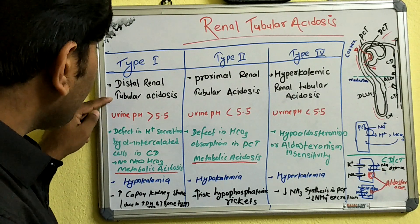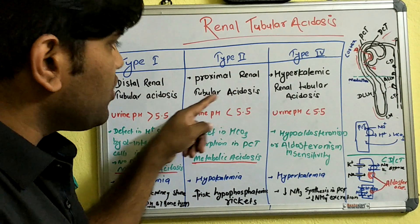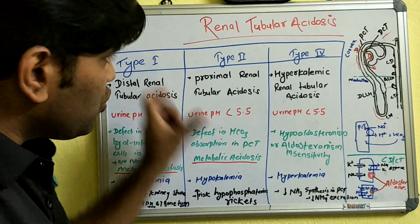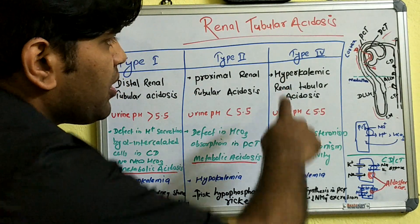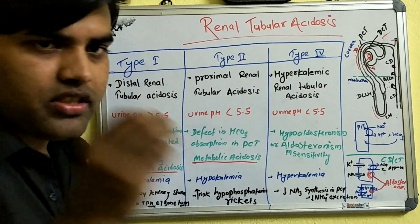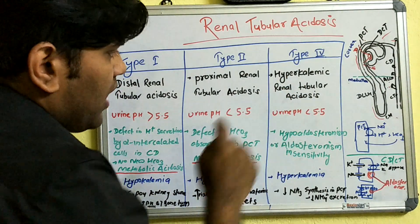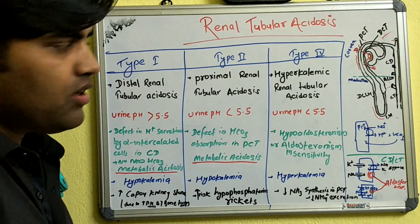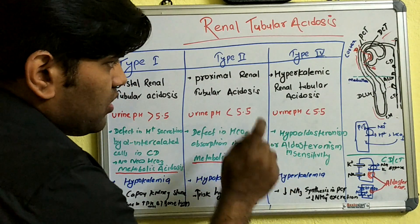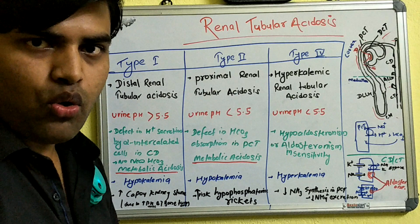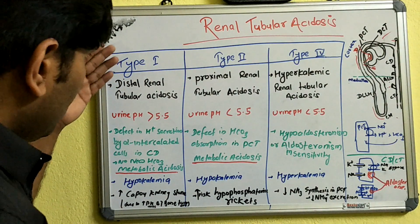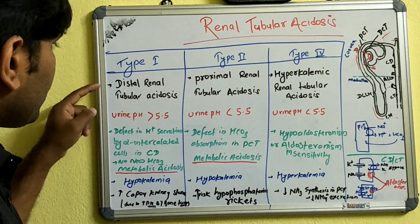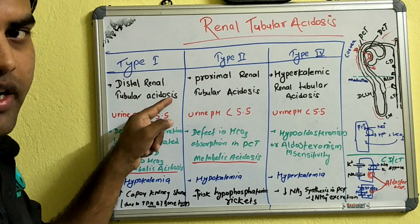Type 1 is known as distal renal tubular acidosis. Type 2 is known as proximal renal tubular acidosis. Type 4 is actually separate — it is called hyperkalemic renal tubular acidosis. It is not actually a disease of the tubule itself; rather, it is related to aldosterone deficiency or aldosterone receptor insensitivity. So Type 4 is a hormone-related issue, not a primary tubular disorder. In Type 1, there is tubular damage in the distal part of the nephron leading to acidosis.